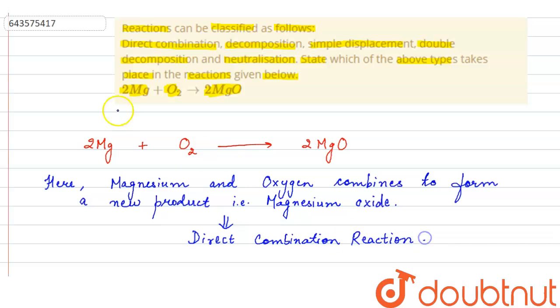As here, two compounds or two elements, they are directly combining to form a new product having different properties. Such type of reactions are also known as synthesis reaction. So, we can also say it is a synthesis reaction.